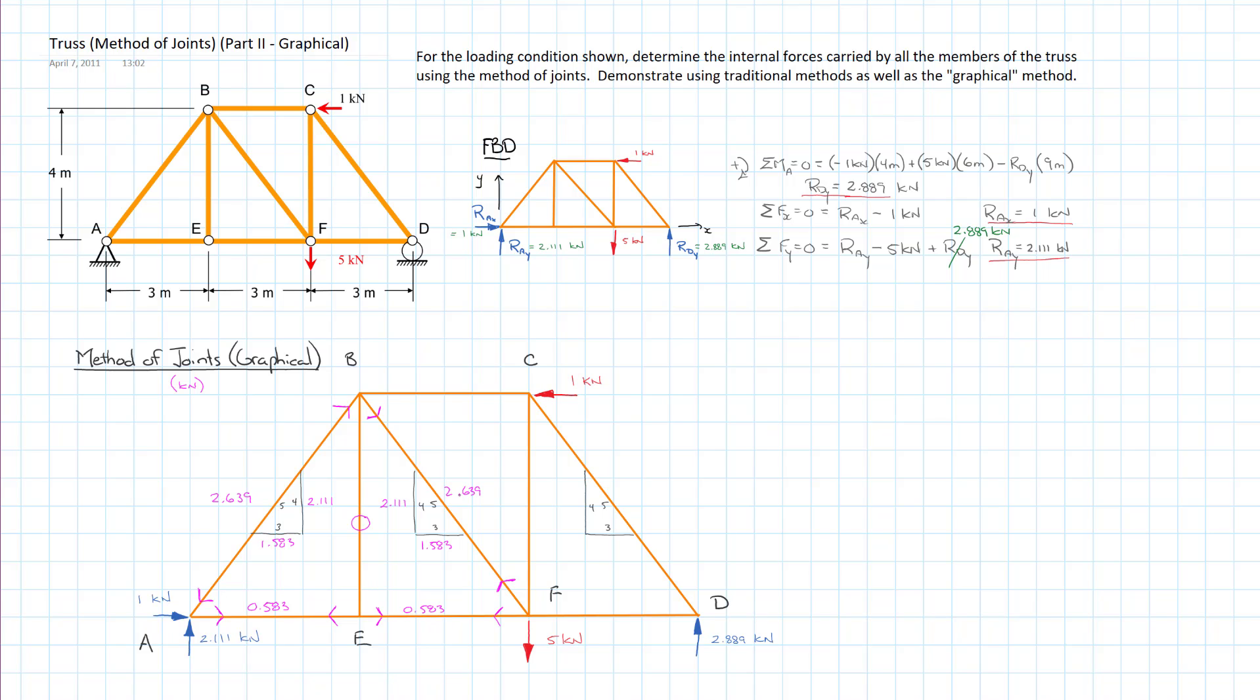I'm going to draw that equal and opposite and then go ahead and resolve these components in accordance with the 3-4-5 ratios. I'll finish my joint at B by resolving BC. Sum of the forces in the X direction, I have 2.11 from AB going to the right, I have 1.583 the horizontal component of AB going to the right, 1.583 the horizontal component of BF also going to the right.